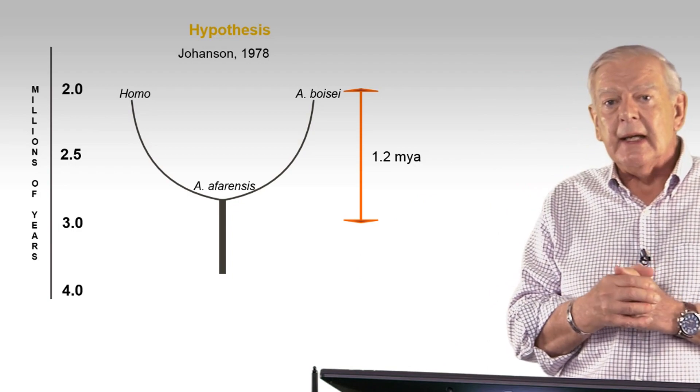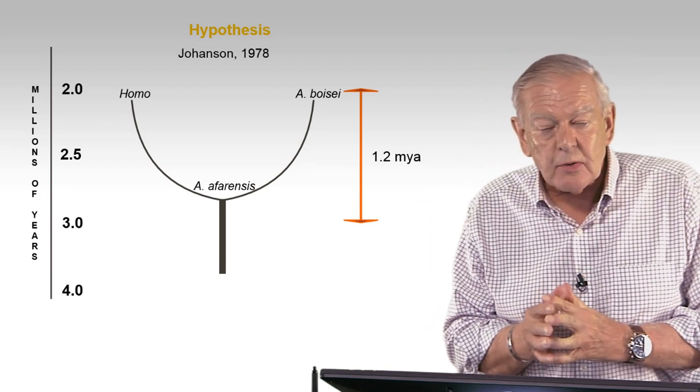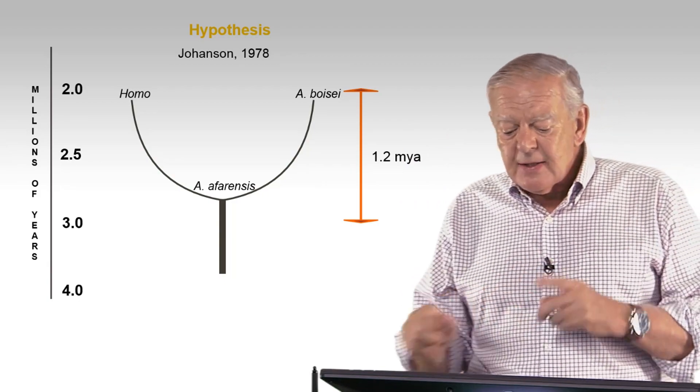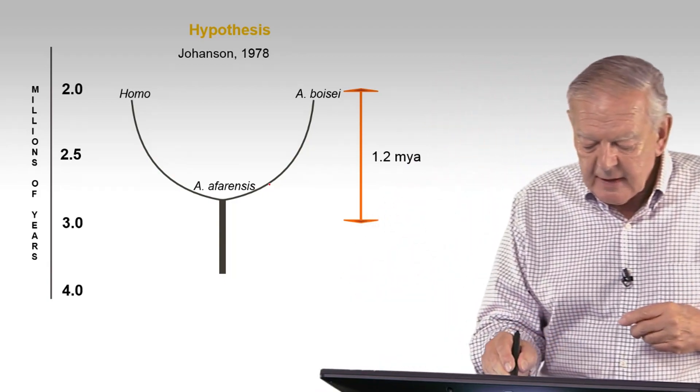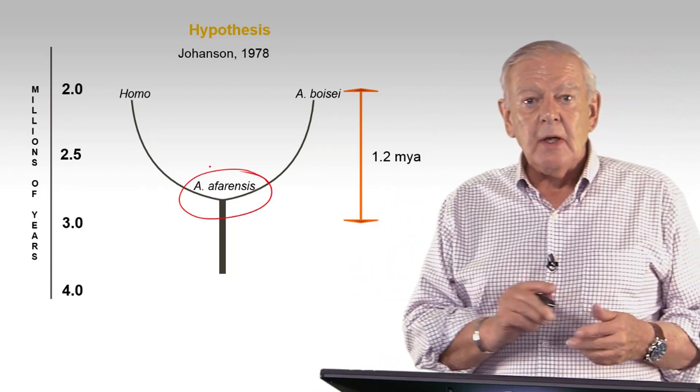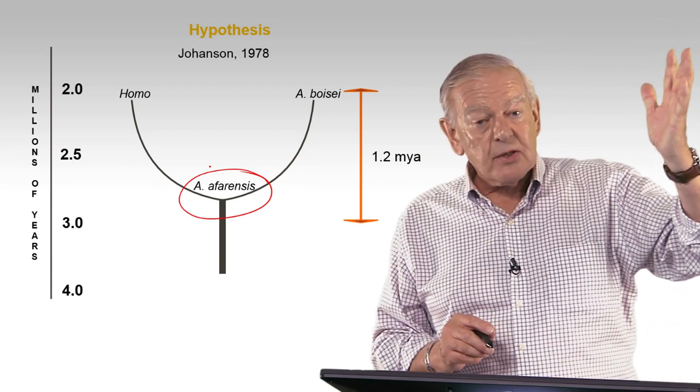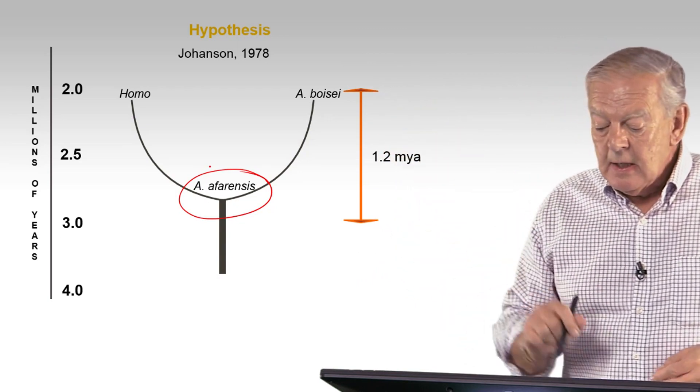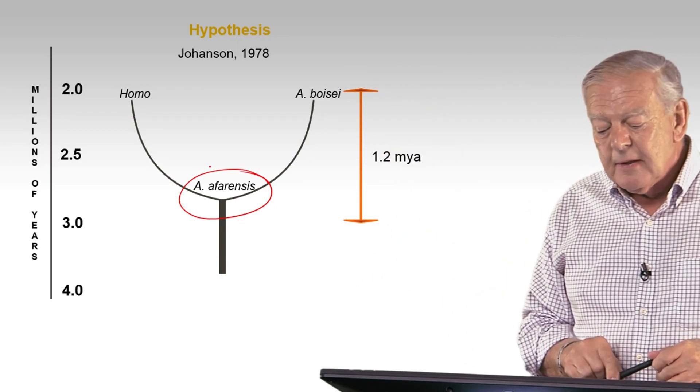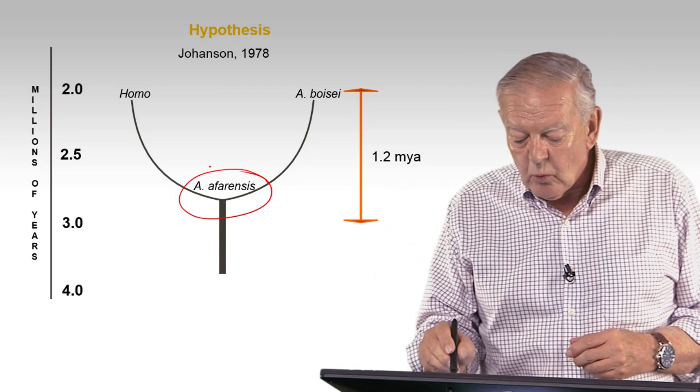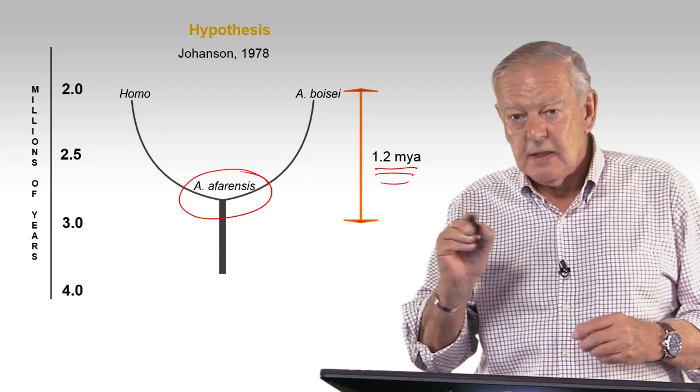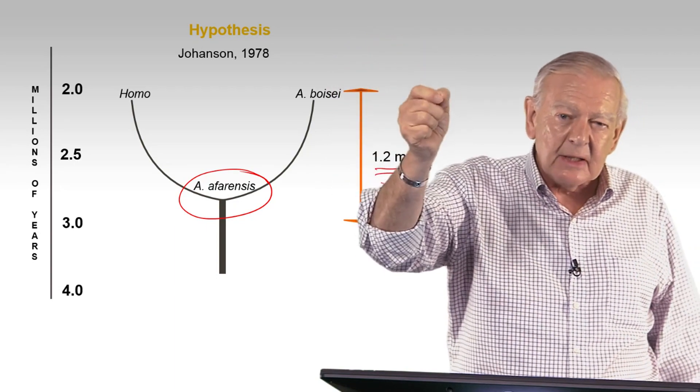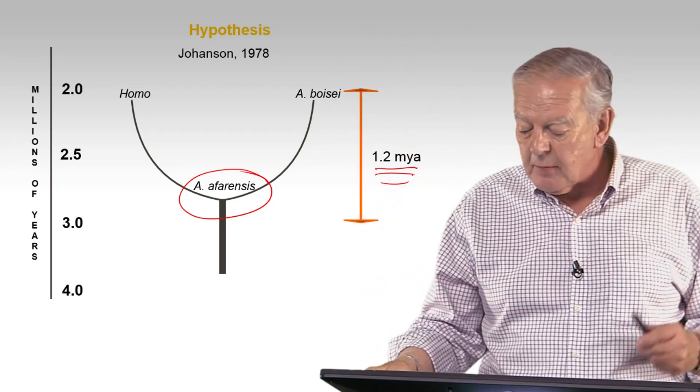So in 1978, when I first announced Australopithecus Afarensis at this Nobel Symposium, I suggested that Afarensis was a common ancestor to the ancestors, common ancestor to Homo, us, and to Australopithecus. The problem was that they were separated by 1.2 million years. That's a long way to connect those two. But I felt that this was the best working hypothesis.